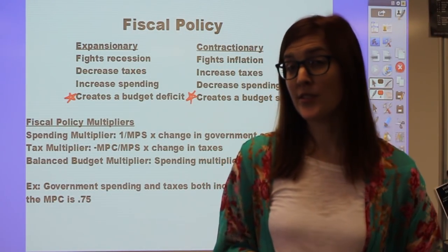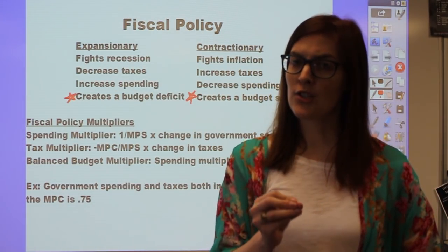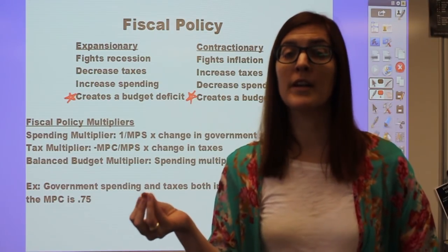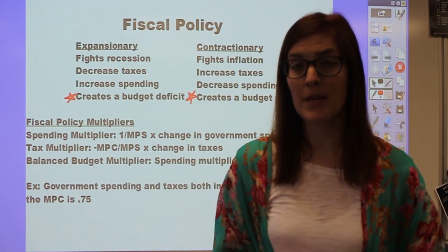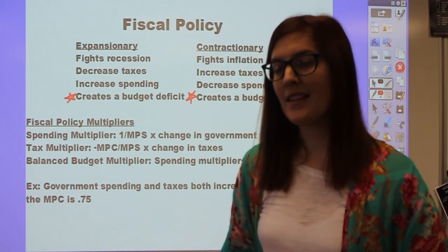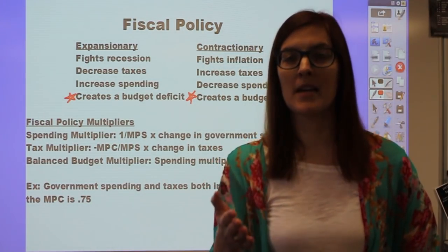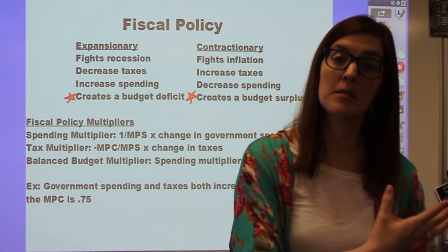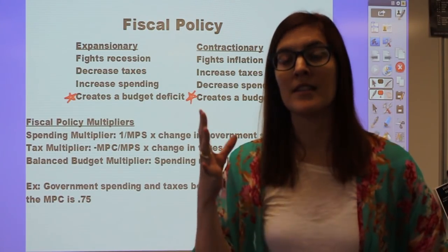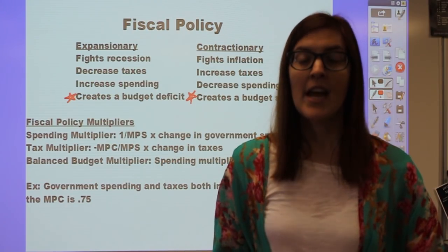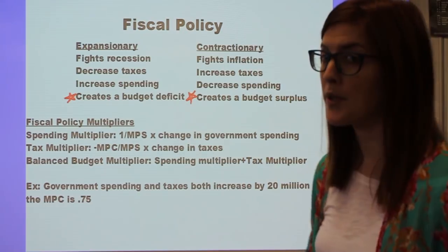Next, we look at how effective fiscal policy is, which is determined by how much of our disposable income we're consuming. The more we consume, the more effective fiscal policy is at changing GDP. This is illustrated by the spending and tax multipliers. When the government changes spending or taxes by a specific amount, they're trying to change GDP by more than that amount. The best way to show this is with a specific example on the board.